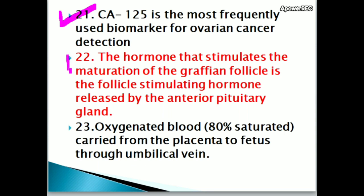The hormone that stimulates the maturation of the Graafian follicle is follicle-stimulating hormone (FSH), and it is released by the anterior pituitary gland.